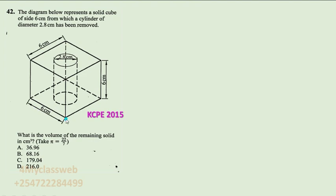Now this cube was drilled a hole at the center which was circular. This hole acquired a shape of a cylinder with a height which was equivalent to the height of that cube. That is 6 cm.